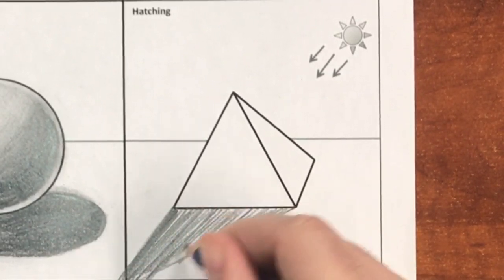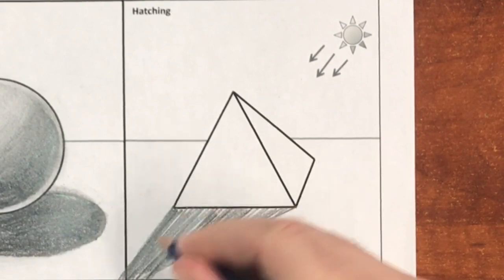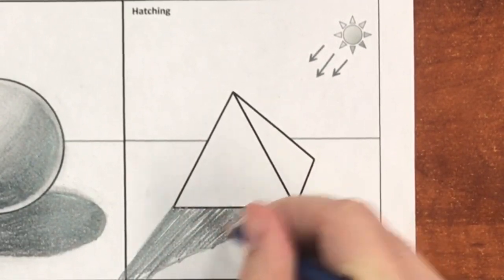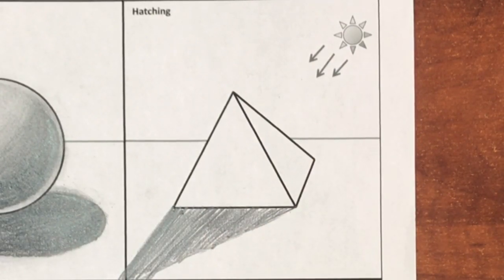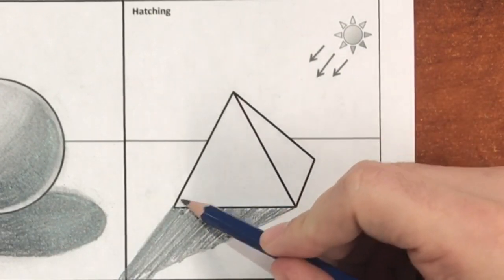With the hatching technique, I usually like to make the hatch marks and hatch lines follow the direction of the form itself in order to accentuate the shape and form of the object that we're drawing.